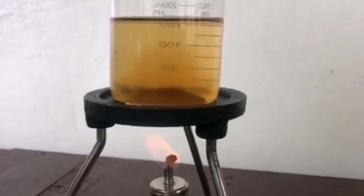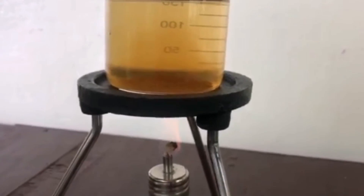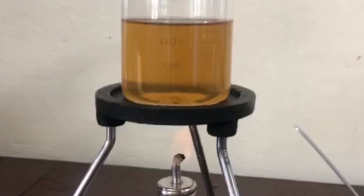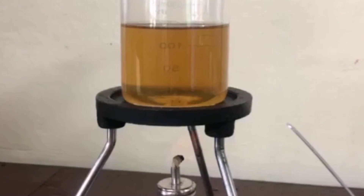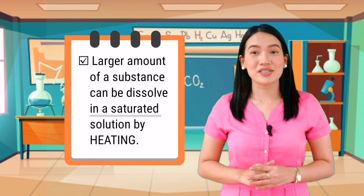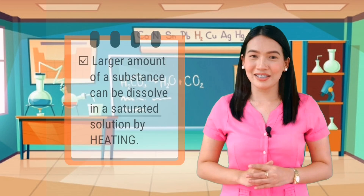Now, is there a way by which we can dissolve the excess sugar which has settled at the bottom of the beaker? Let's heat the solution and see what happens. Notice that the excess sugar settled at the bottom starts dissolving. Therefore, we can say that heating a saturated solution makes it unsaturated, and hence, a larger amount of a substance can be dissolved in a saturated solution by heating.